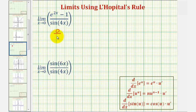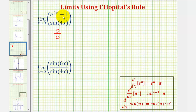Because of this indeterminate form, we can apply L'Hôpital's rule to help us determine this limit. Let's look at this more closely first. Notice in the numerator, as x approaches zero, this approaches e to the zero, which approaches one. As this approaches one, we subtract one, and therefore the numerator approaches zero.